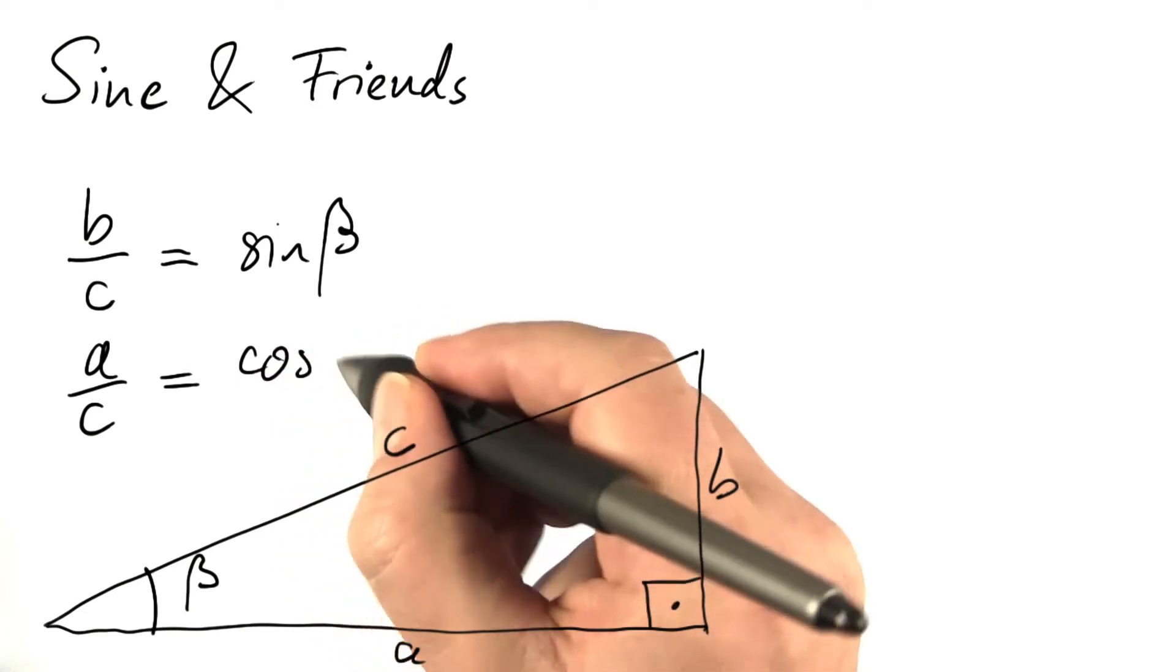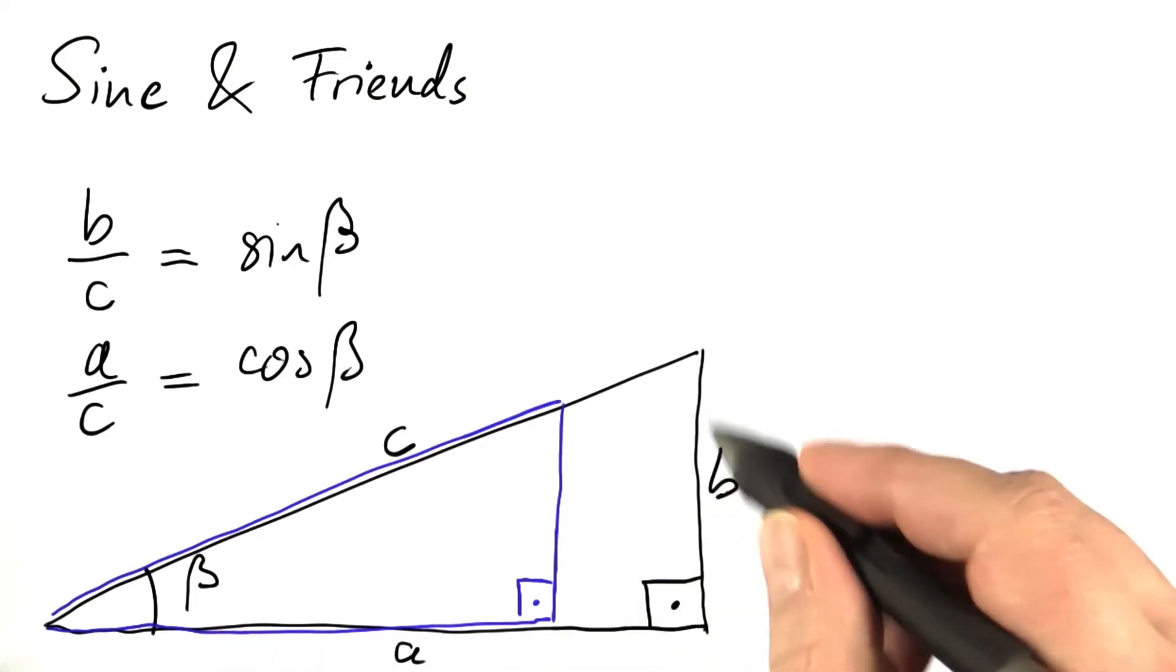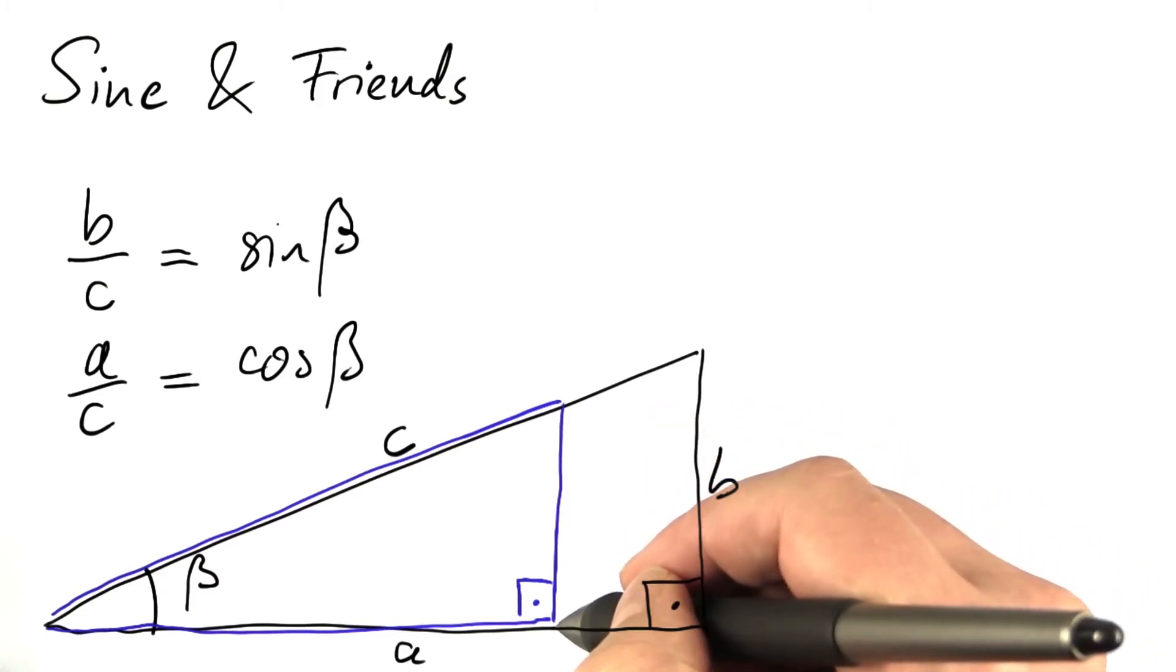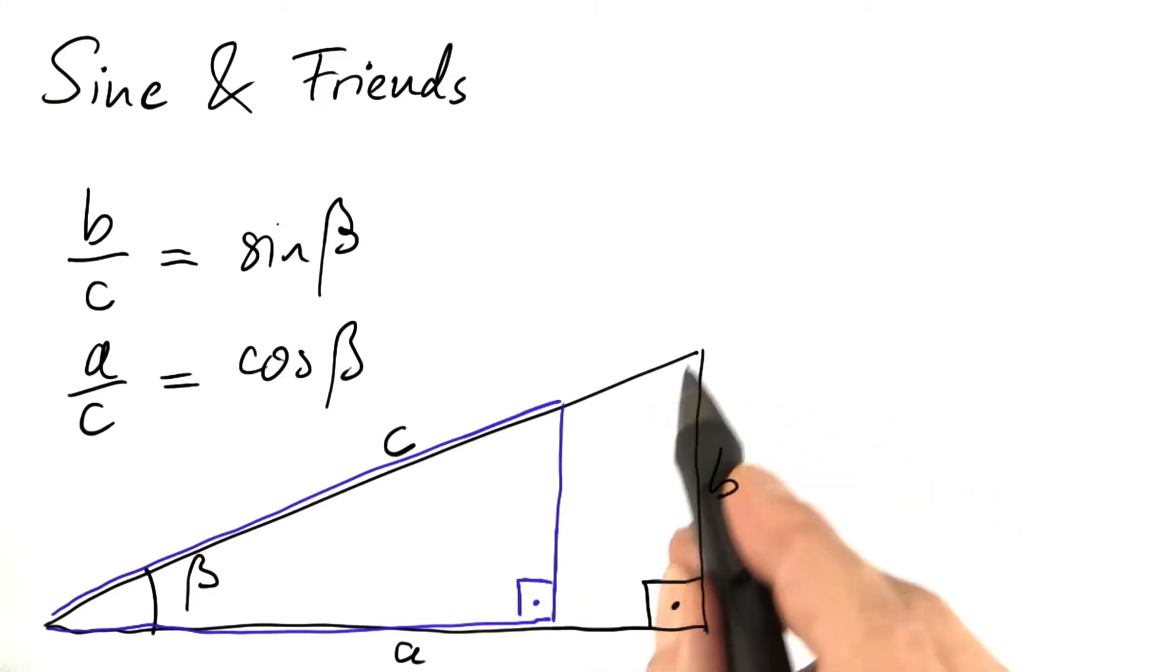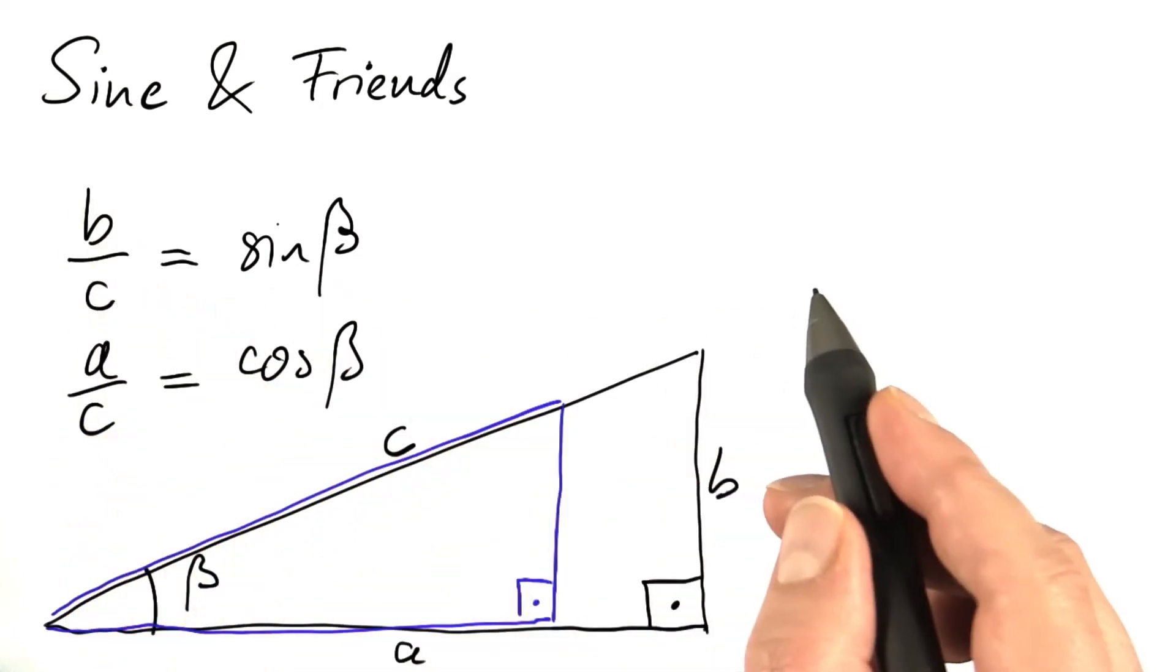If we have a different right triangle with the same angle beta, you see, in this case, the leg B shrinks in the same ratio as the leg C shrinks. So this ratio, B over C, stays constant.